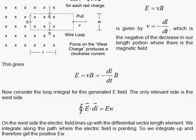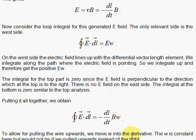Alright, let's put this together. If we put this together, we have E integrated with the dl around the loop is minus dl dt times B, because that is what E is, and then W is placed to the right.